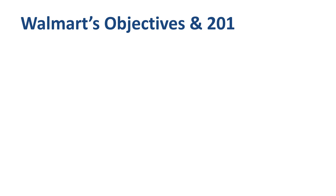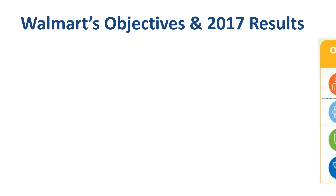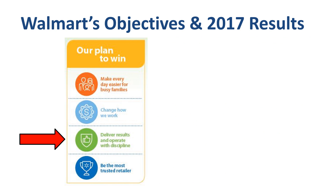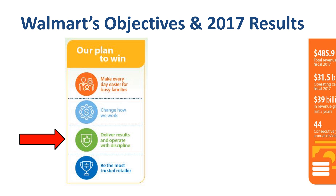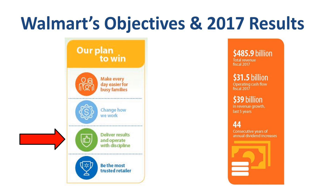One of Walmart's key objectives is a financial one: to deliver results and operate with discipline. In the Walmart by the Numbers one-page summary in the front of the annual report, a lot of emphasis is put on revenue performance from the income statement, as well as on cash flow performance — more specifically the record operating cash flow and the 44th year of annual dividend increases to shareholders.